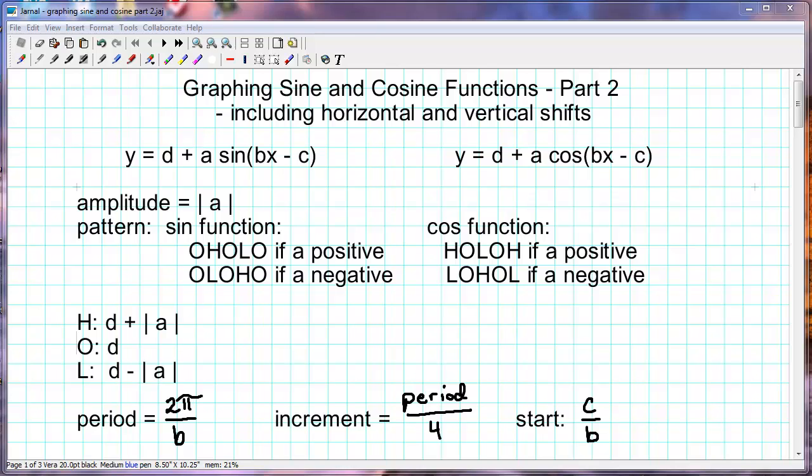In the first part, we talked about graphing y equals a sine or cosine of bx. In this tutorial, we're adding a letter d, something added or subtracted to the function, and in the parentheses with the x, we're subtracting a number c. These will cause vertical shifts - the d causes vertical shifts, and the c will shift the graph horizontally, shifting where we start our pattern.